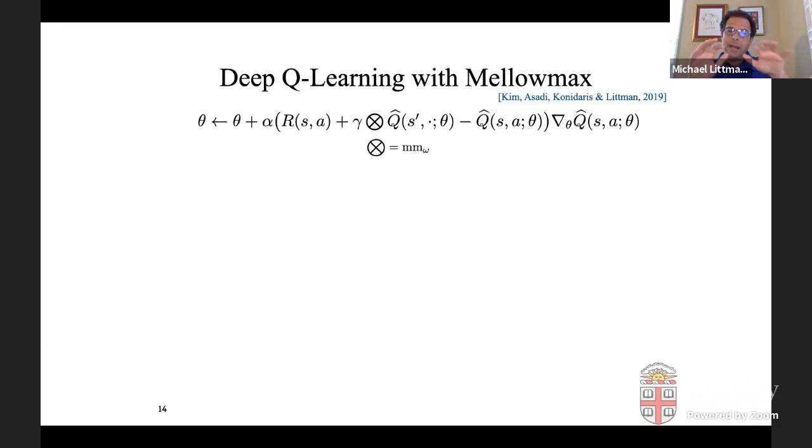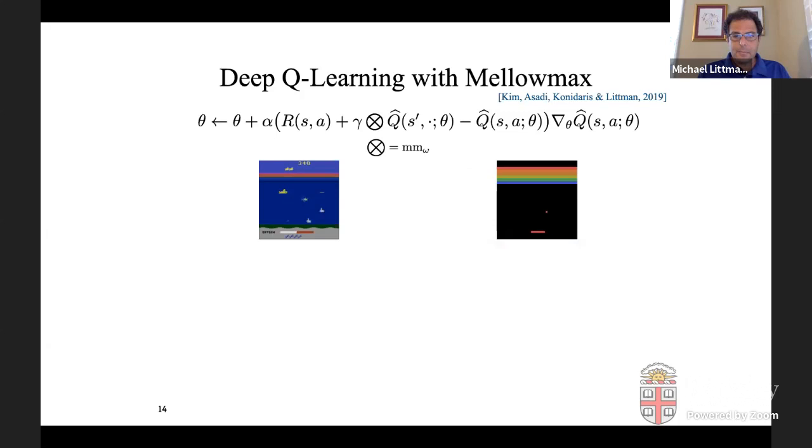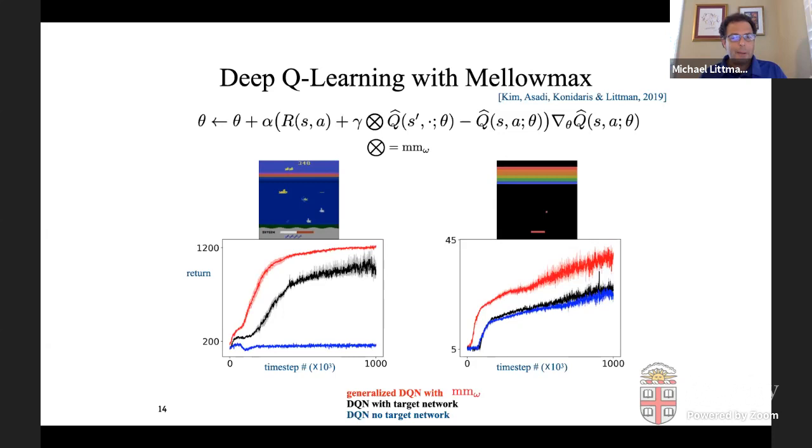So that frozen network is the target network. And it's really awkward to have that because now you've got basically two copies of the value function that you're training kind of simultaneously. And it complicates the algorithm. It makes it more expensive to run. So it'd be great if you could get rid of that. And so we said, well, okay, maybe we can get rid of it by actually replacing the max in Q learning with mellow max.